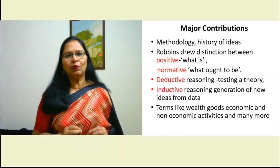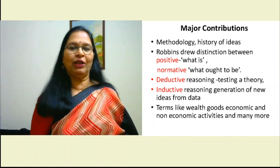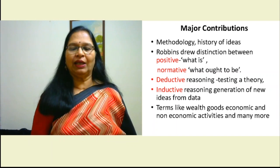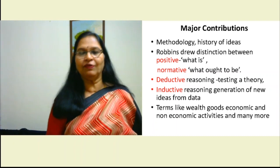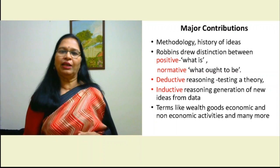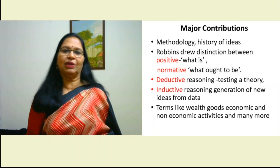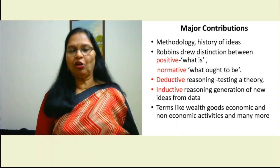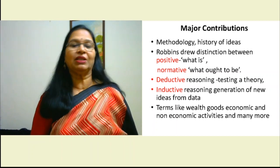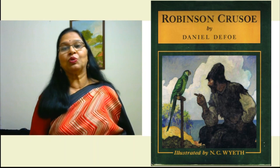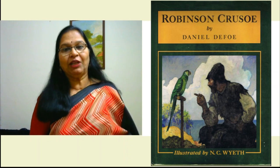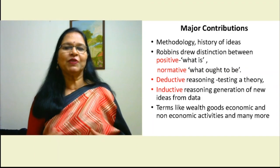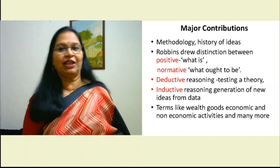In simple terms, positive economics describes how economic activities are carried out, while normative economics focuses on what ought to be or should be. Inductive and deductive reasoning are used in research and will be covered in coming sessions. Robbins also introduced the distinction between economic and non-economic activities. For example, if Robinson Crusoe teaches his parrots to sing on an island it is not an economic activity, but if he performs on a stage and earns money, the same activity becomes an economic activity.